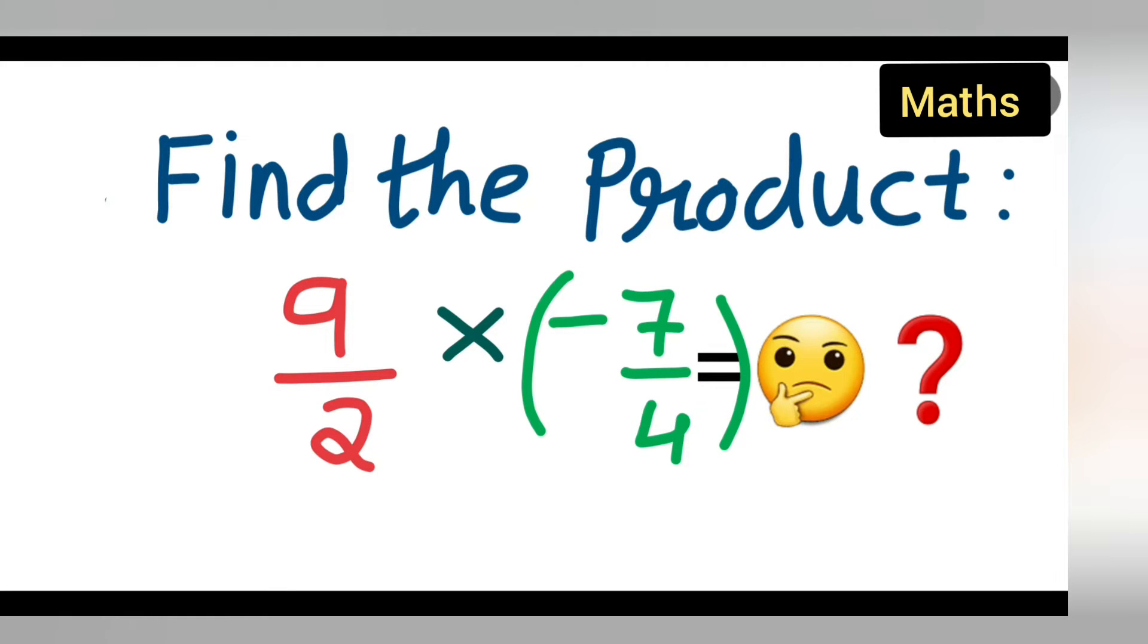So welcome to today's class of mathematics. Today's question is find the product of the given number. Okay, 9 upon 2 multiplied by minus 7 upon 4.